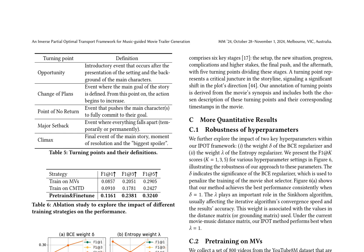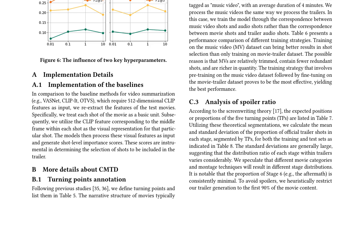The paper presents an inverse partial optimal transport framework for music-guided movie trailer generation, introducing a novel approach to select movie shots based on the audio of the trailer by leveraging the correspondence between movie scenes and trailer music. The authors define six key stages in the narrative structure of movies and annotate turning points, which are critical junctures in the storyline that signal a significant shift in the plot's direction. The proposed movie shot selector is trained using a dataset of movie-trailer pairs and evaluated on a test set of unseen movies, outperforming baseline methods in terms of F1 at 1, F1 at 3, and F1 at 5 scores.